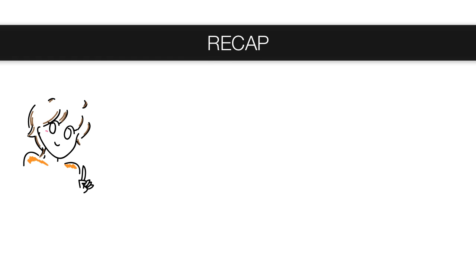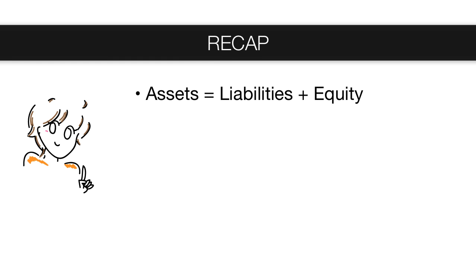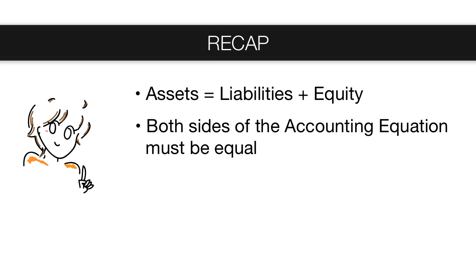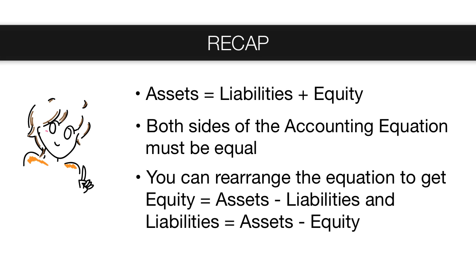Here's a recap of the key words and concepts we just learned: Assets equal liabilities plus equity. Both sides of the accounting equation — and any math equation for that matter — must be equal. You can rearrange the equation to calculate different things. For example, equity equals assets minus liabilities, and liabilities equals assets minus equity.